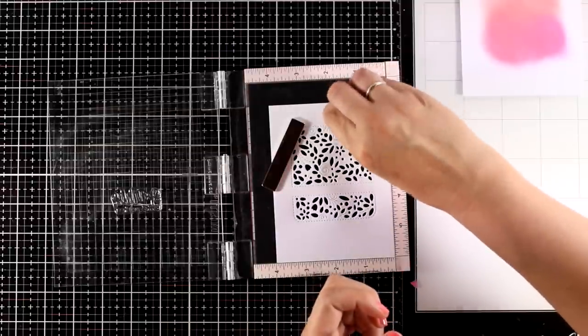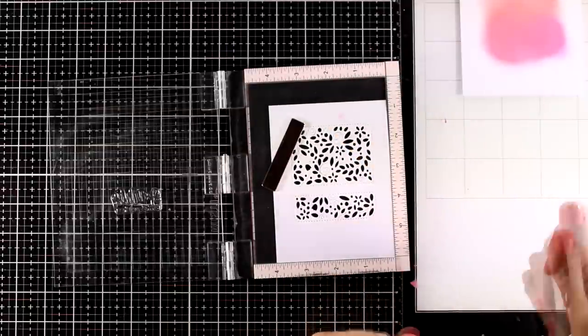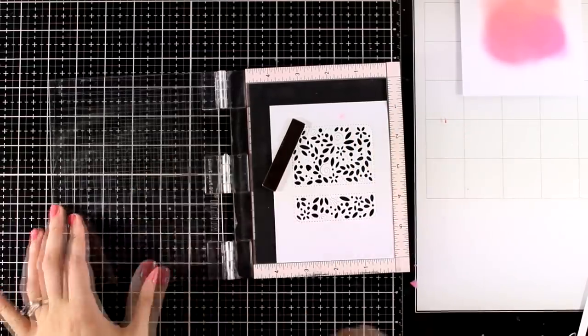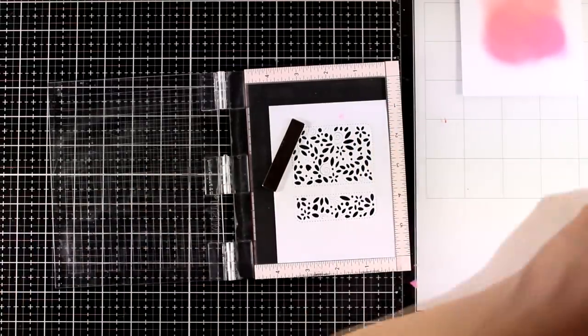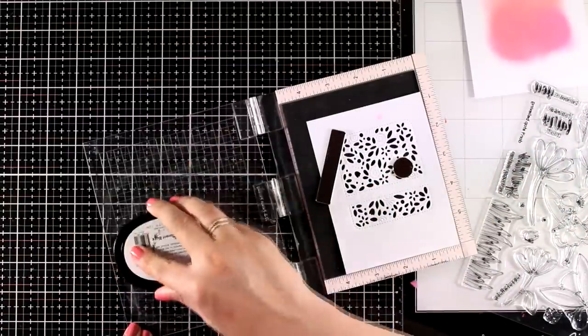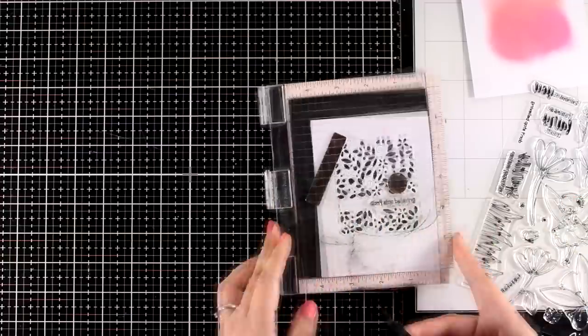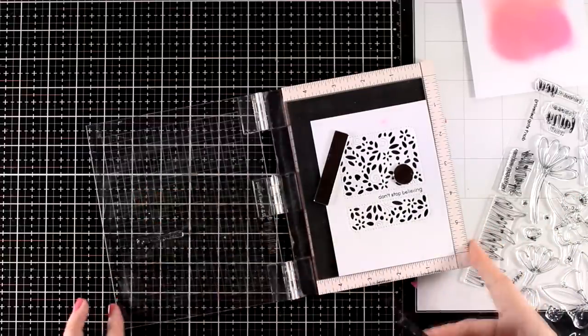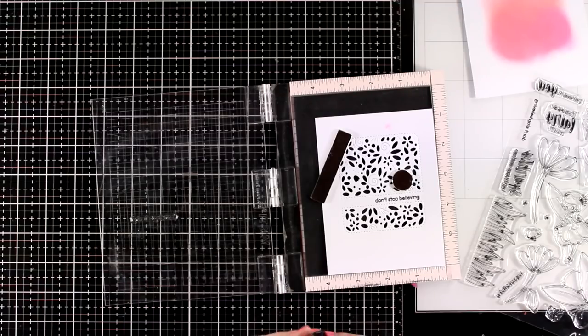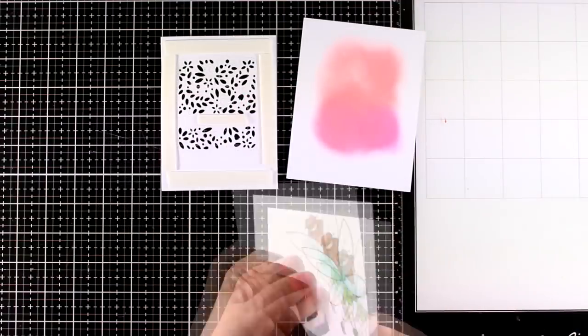However, I'm not going to run it through a die cutting machine again. I'm using this piece and I'm going to show you that there's always a way to cover up little mistakes like this. I'm just going to continue as if nothing happened there. I'm going to stamp the sentiment with black ink, and for this card I went with 'Don't Stop Believing' in pink since I'm planning to use one of the fairies.